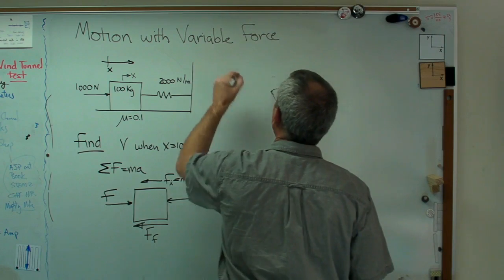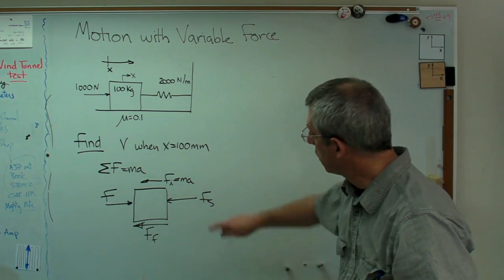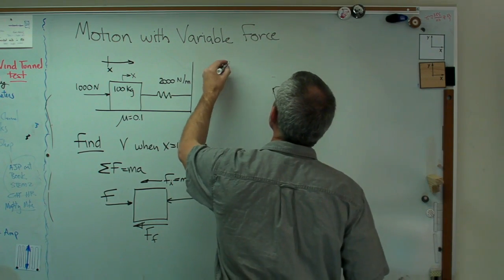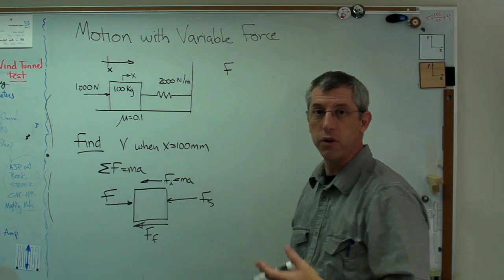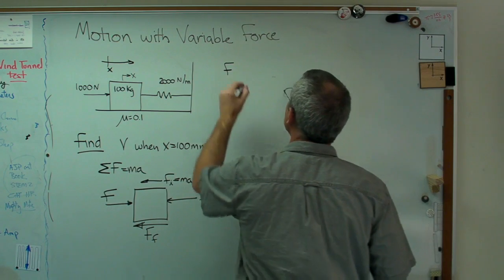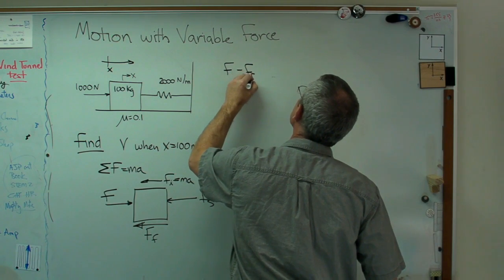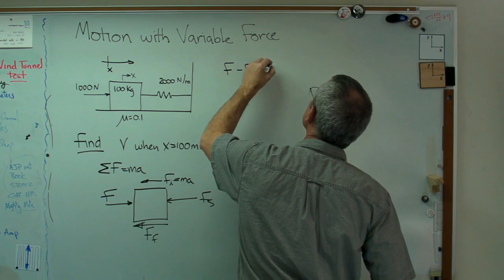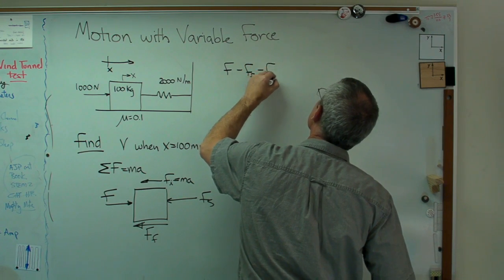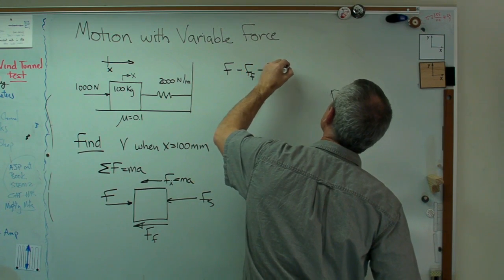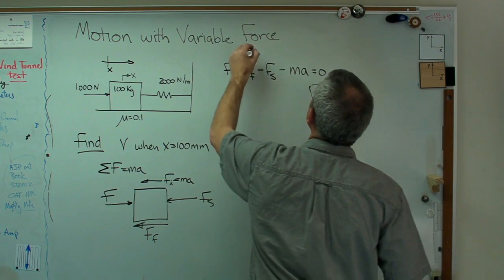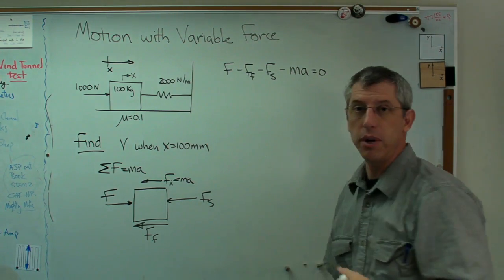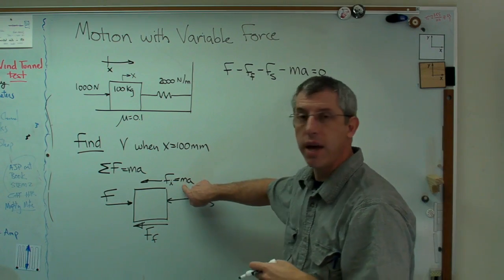Now we're going to sum all the external forces, including this one. So let's just go through the list here. There's going to be an external force pointing to the right. So that's positive minus a friction force minus a spring force minus this inertial force, ma. And all those have to be equal to zero.